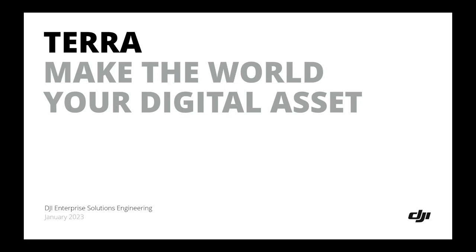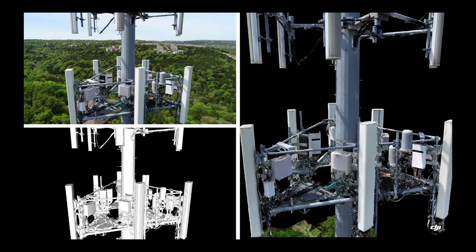Before we deep dive into those, I'd like to share some examples and results collected from DJI Terra software. The first scenario we're looking at is a cell tower. In the upper left corner you will find an image which was originally captured by a drone. This photo contains the structure of the cell tower. On the right side, you will find that same structure — however, this one was a model reconstructed by DJI Terra software, utilizing image data captured from the drone.